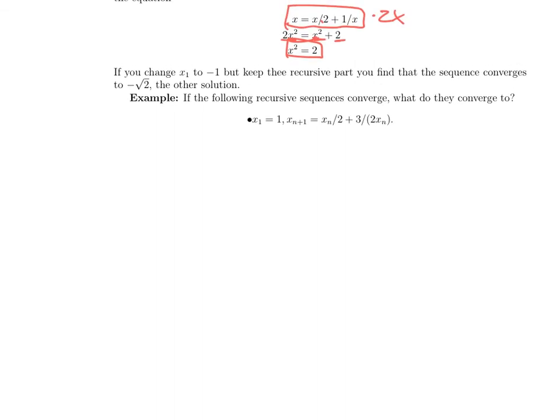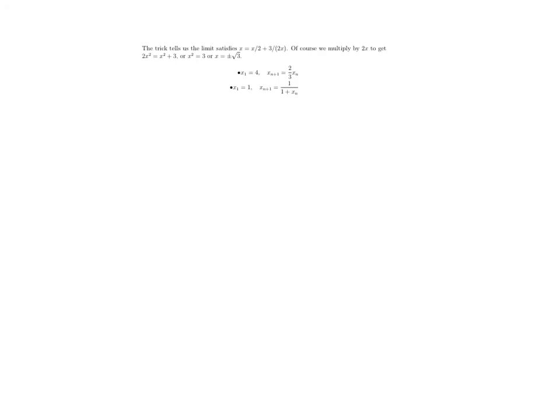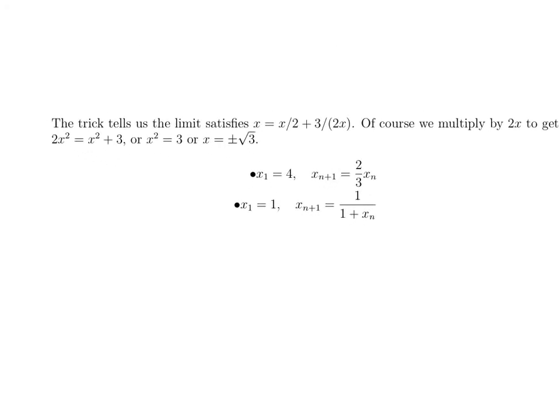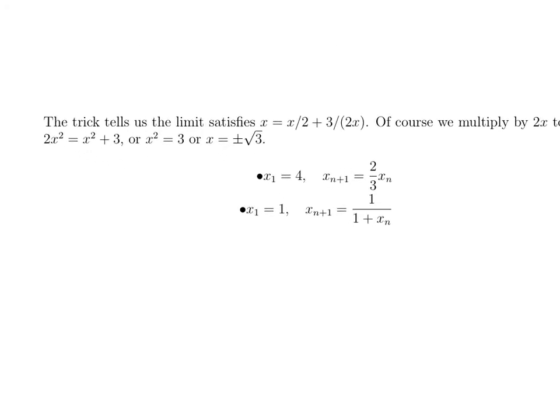All right, so here's an example. Here the example is x_n—very similar to our last one—x_{n+1} = x_n/2 + 3/(2x_n), and we'll start with x_1 = 1. So if that's the sequence, the limit must be what's called a fixed point of this equation. It must satisfy x = x/2 + 3/(2x).